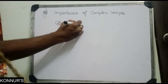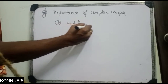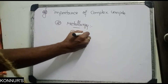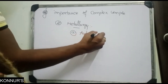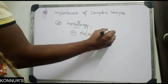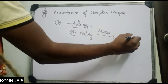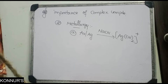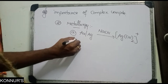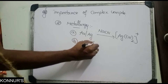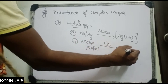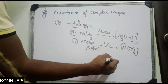In metallurgy, these complexes are also useful. Gold and silver are extracted using NaCN — they form complexes [Ag(CN)2]− and [Au(CN)2]−. Nickel is purified using carbon monoxide to form Ni(CO)4 complex — this is the Mond process.